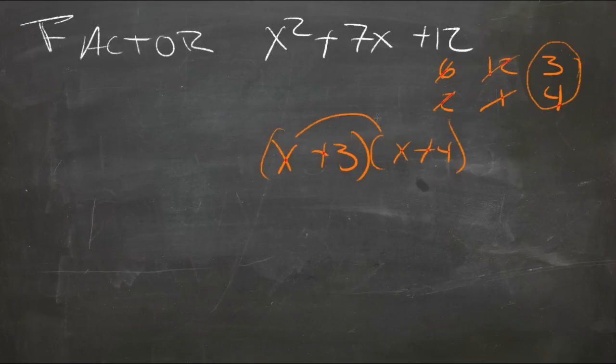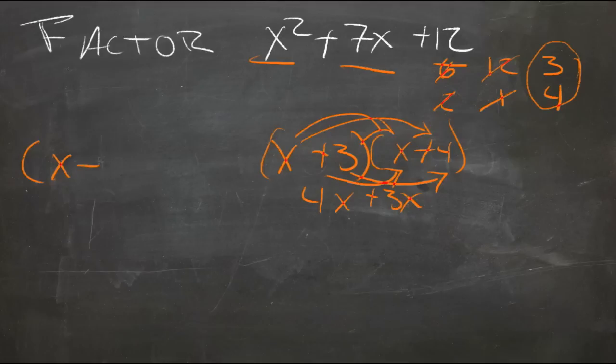So we'd have x squared and then we'd have 4x and 3x, that's our 7x. And then 3 times 4, that's our 12. So yep, our correct solution, our correct factoring is x plus 3 times x plus 4.